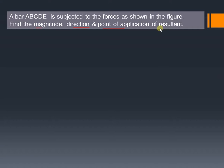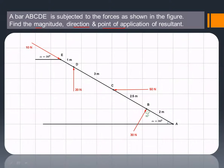This point of application part is very very important. As shown in the figure, the distance between A and B is 2 meters, between B and C it is 2.5 meters, between C and D it is 3 meters, and between D and E it is 1 meter. At point B, a 30 Newton force is acting making an angle of 90 degrees with AB. A horizontal force of 50 Newton is acting at point C. A vertical force of 20 Newton is acting at point D, and a force of 10 Newton is acting along this particular bar.